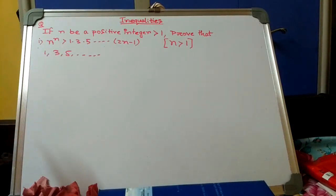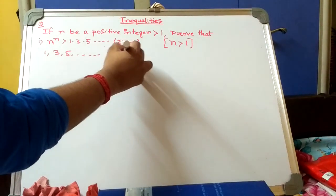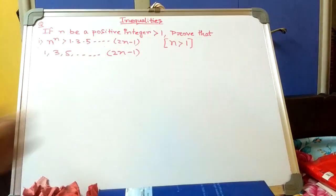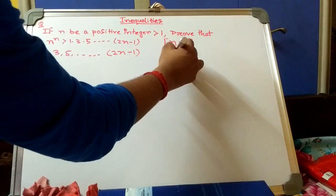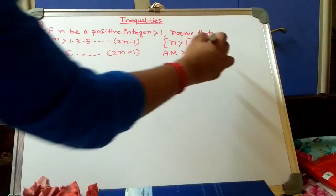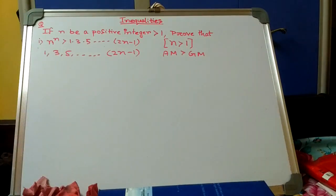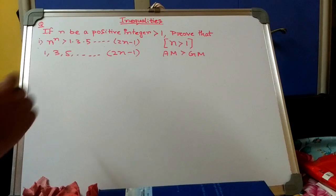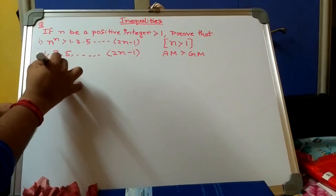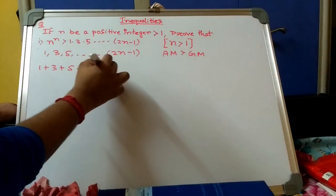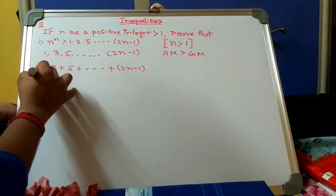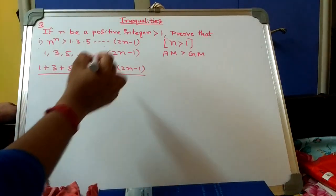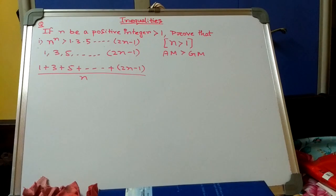Applying AM ≥ GM, we get: (1 + 3 + 5 + ... + (2n-1)) / n ≥ (1 · 3 · 5 · ... · (2n-1))^(1/n), since we are considering n positive real numbers.